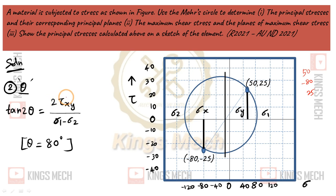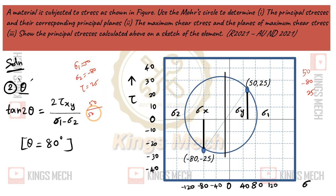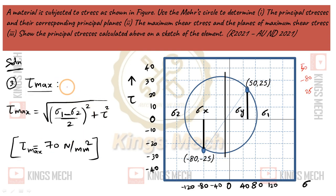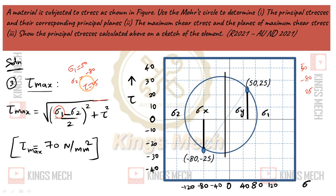The radius equals plus or minus the square root of ((sigma1 minus sigma2) divided by 2) squared plus tau squared. The formula for tan 2θ is equal to (2 times tau xy) divided by (sigma1 minus sigma2). Sigma1 value is 50, sigma2 value is minus 80, tau value is 25. So: 2 times 25 divided by (50 minus of minus 80) equals 50 divided by 130. The value of 2θ gives theta equal to approximately 10 degrees. Tau max equals the square root of ((sigma1 minus sigma2)/2) squared plus tau squared, with sigma1 = 50, sigma2 = minus 80, tau = 25, giving tau max of 70 N/mm².